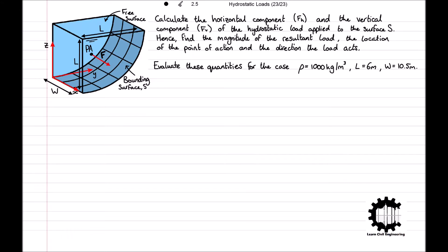For this problem we have a volume of liquid in the shape of a quadrant with a radius of L and a uniform width of W. The liquid is bound by the surface S and the free surfaces open to the atmosphere. The coordinate directions X, Y, and Z are defined as shown relative to the bottom corner of the volume of liquid, with Z denoting the vertical height above the base of S. The liquid applies a hydrostatic load from the point of action PA onto the surface, with magnitude F. We need to calculate the horizontal component FH and the vertical component FV of the hydrostatic load applied to surface S, then find the magnitude of the resultant load, the location of the point of action, and the direction the load acts.